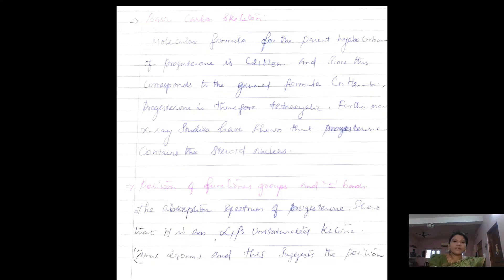And we have to find out the nature of the basic carbon skeleton. The molecular formula for the parent hydrocarbon of progesterone is C21H36. This corresponds to the general formula CnH2n-6. The usual calculation shows progesterone possesses four cycles in its structure - that is, it is a tetracyclic hormone.